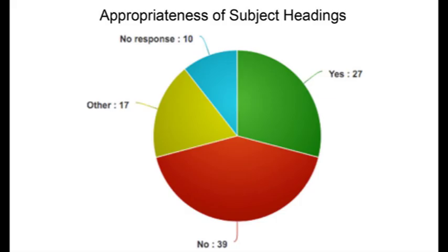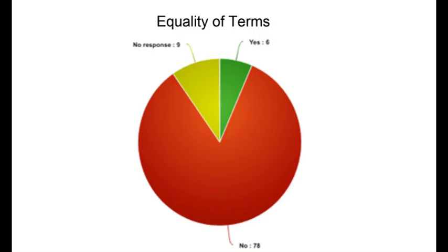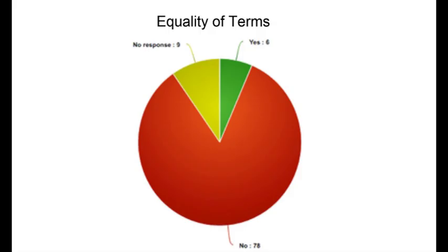Moving on to sexual identity: this part of the study showed three actual library records for books about sexual identity where the subject headings given were about gender identity. The question asked: do these subject headings seem appropriate? Twenty-seven people said yes, thirty-nine said no, seventeen said other — meaning some subject headings are okay and some are not. When asked whether sexual identity and gender identity are the same thing, most people said no. Spoiler alert: they're not. This showed a disconnect between how we assign subject headings and how we actually understand the terms.